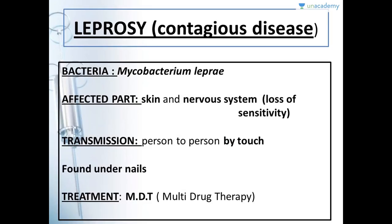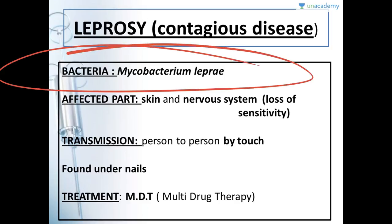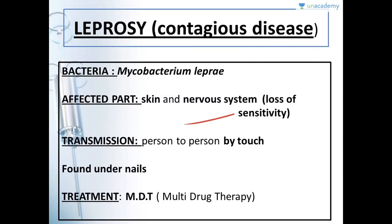Leprosy is a very contagious disease — it spreads very fast. That's why the government makes separate housing localities for patients suffering with leprosy, and hospitals have separate departments for them. They are not treated with normal patients because normal patients also run the risk of getting leprosy. The bacteria is Mycobacterium leprae. The affected part is skin and nervous system, causing loss of sensitivity — the person cannot feel any touch or sharp sensation.